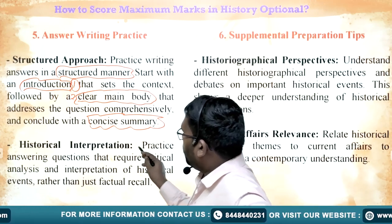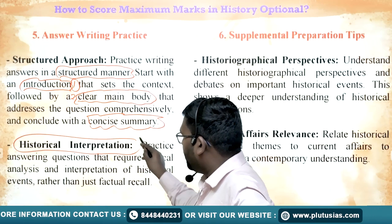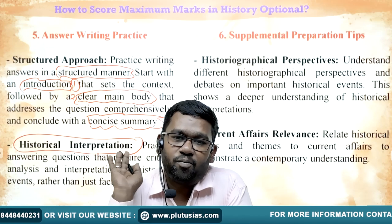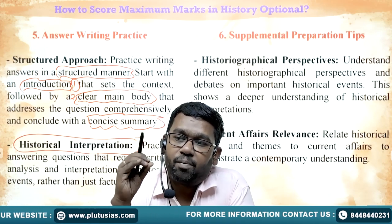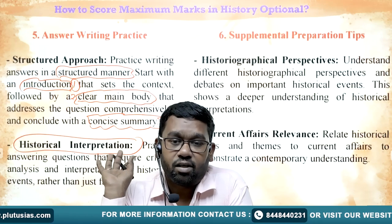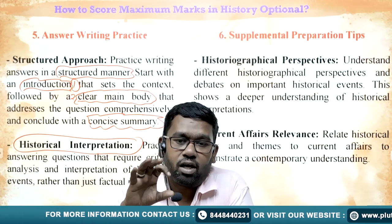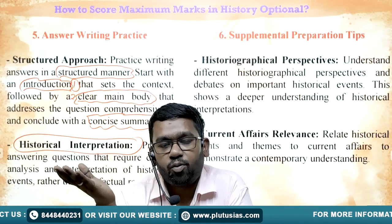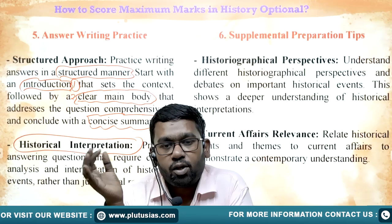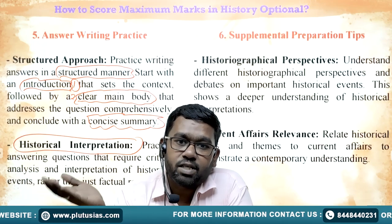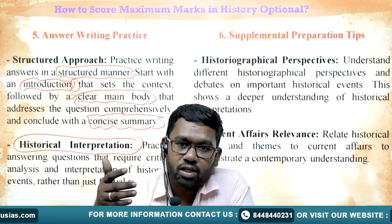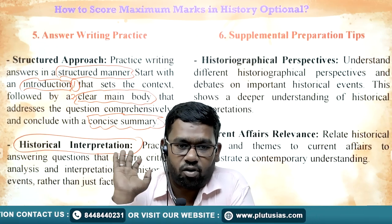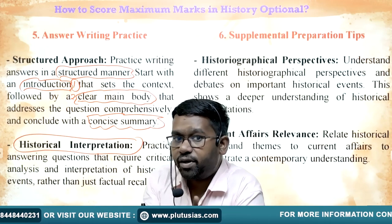In answer writing, we should also focus on historical interpretation. Whenever we write any answer, if there is a historical view, it is very important — you will score the highest marks. Suppose you have written a good answer and are getting 60%; if you include historical interpretation — the name of historians who argue about the topic — you will get one to 1.5 marks extra, bringing you to 70–75%. For example, on the 1857 revolt, include which historians argue it was a sepoy mutiny, a first war of independence, or a popular revolt.